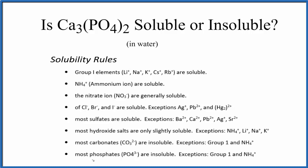The rules tell us that most phosphates are insoluble with a few exceptions: Group 1 elements like sodium and potassium, and ammonium phosphate. But we don't have calcium here in our exceptions, so we can say based on the solubility rules that calcium phosphate is insoluble in water.